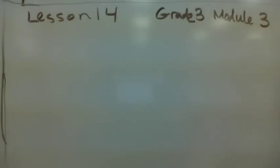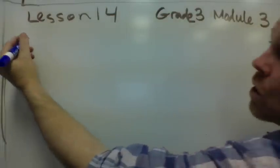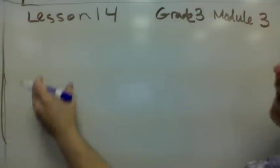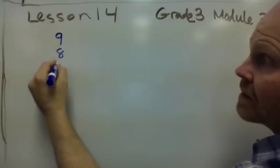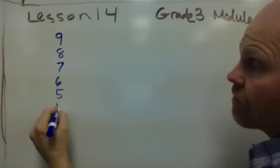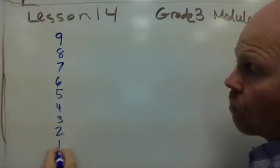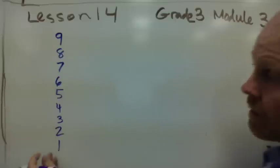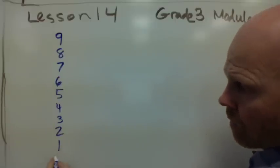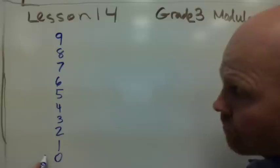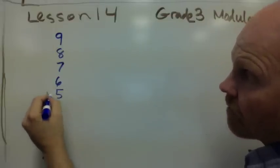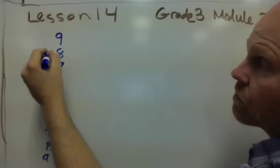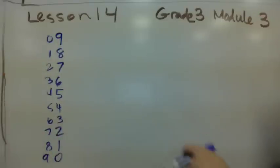So a couple of recaps. First, we learned that there's a really cool pattern in our 9 times tables, that we could do 9, 8, 7, 6, 5, 4, 3, 2, 1, and then zero. And then over here we could do 0, 1, 2, 3, 4, 5, 6, 7, 8, 9, and that this is our 9 times tables.